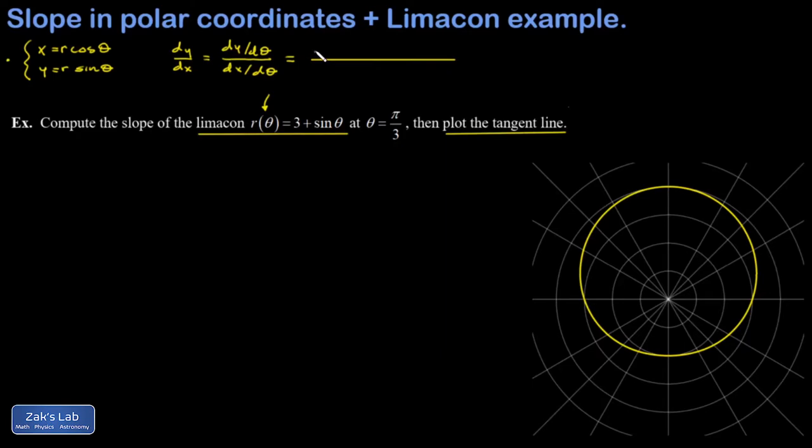If you look at our example, it's explicitly stated right there, r is a function of theta. This means we have to use the product rule when we differentiate. So dy d theta is going to be r prime of theta sine theta. We differentiate the first piece, leave the second piece alone, plus r of theta times the derivative of sine theta, which is cosine theta. Similarly for x, we get r prime of theta cosine theta, and then the derivative of cosine is negative, so I have minus r of theta sine theta.